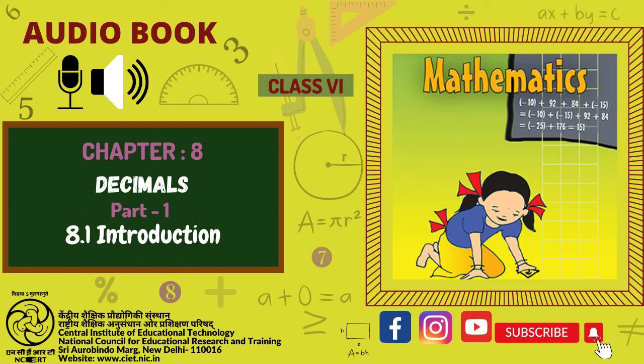Page 167. Fractions as decimals. We have already seen how a fraction with denominator 10 can be represented using decimals. Let us now try to find decimal representation of A. 11 upon 5, B. 1 upon 2. A. We know that 11 upon 5 is equal to 22 upon 10 which is equal to 20 plus 2 upon 10 which is equal to 20 upon 10 plus 2 upon 10 which is equal to 2 plus 2 upon 10 which is equal to 2.2. Therefore 22 upon 10 is equal to 2.2 in decimal notation.